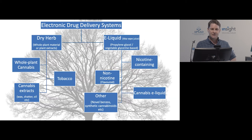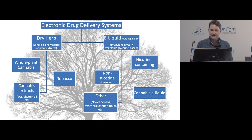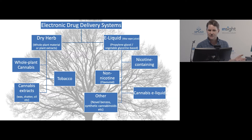We've put together a family tree to explain the range of devices available. We can broadly define these devices into two major types. The most common are the e-liquid devices — e-cigarettes or vapour devices that use a liquid made up of propylene glycol and vegetable glycerin. The other major type are dry herb vaporisers, designed to heat whole plant material or extracts to just below combustion to release active ingredients.